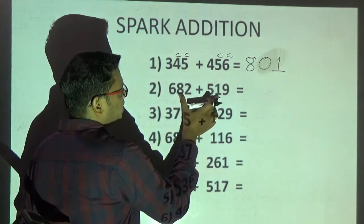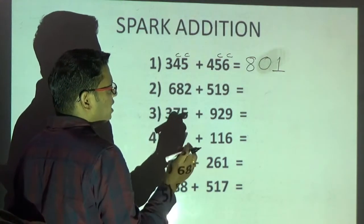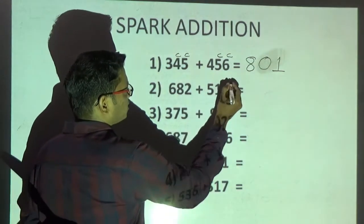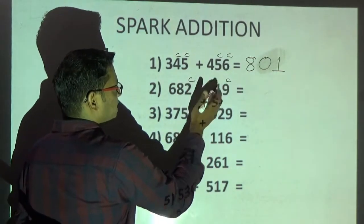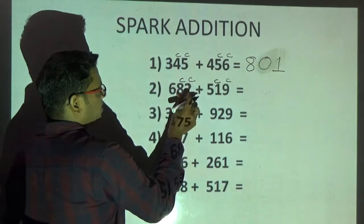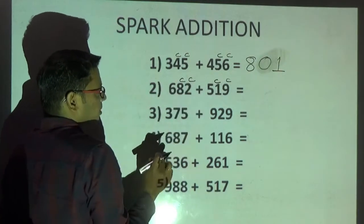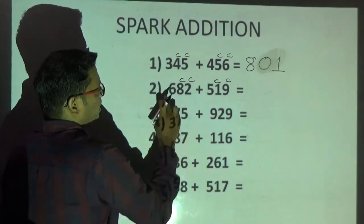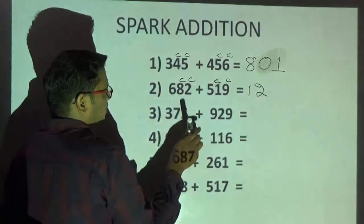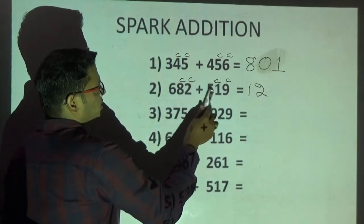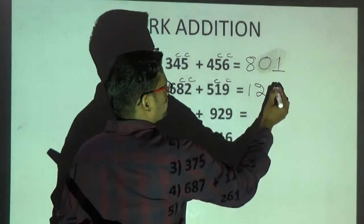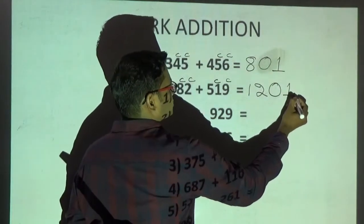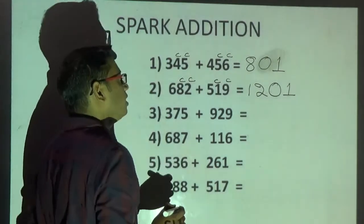Next problem: 6 plus 5 is 11, observe next two digits — it becomes 9. Whenever you get 9 in between digits, be very careful and observe the next two digits. 9 plus 2 is going to generate carry, so 8 plus 1 (which is 9) will also generate carry. Since these are generating carry, increase the number by 1. 6 plus 5 is 11, since next numbers generate carry, write 12. Then 8 plus 1 is 9, next digits generate carry, write end digit 0. 9 plus 2 is 11, write end digit 1. So answer is 1201.